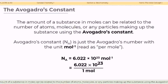The amount of a substance in moles can be related to the number of atoms, molecules, or any particles making up the substance using the Avogadro's constant. The Avogadro's constant, N sub A, is just the number with the unit per mole. And we all know that the value of it is 6.022 times 10 raised to the power of 23 mole raised to the power of negative 1. It only denotes that 6.022 times 10 raised to the power of 23 over 1 mole.